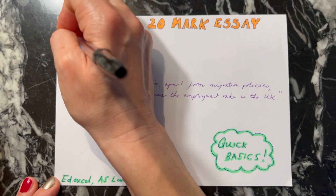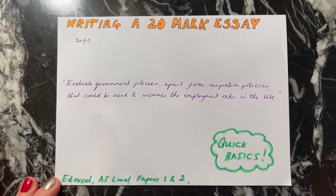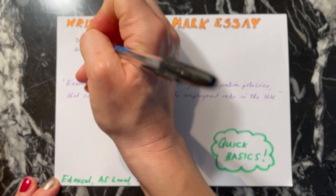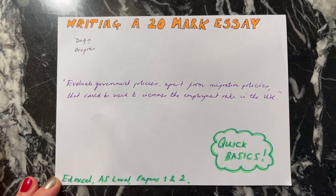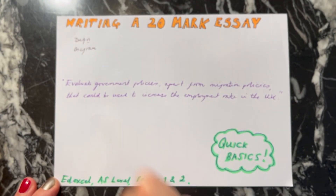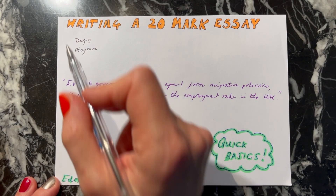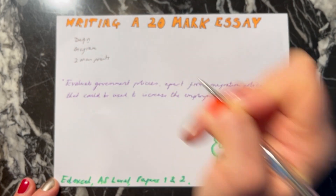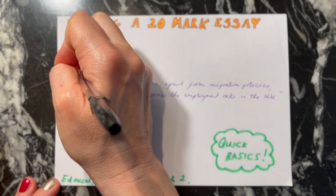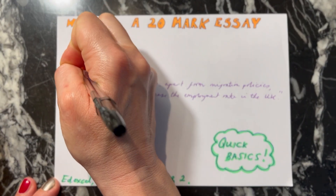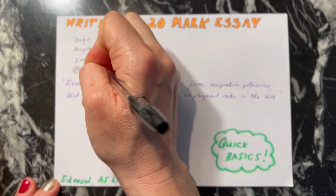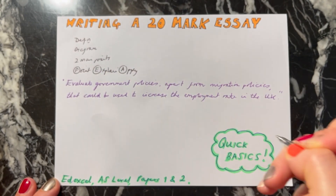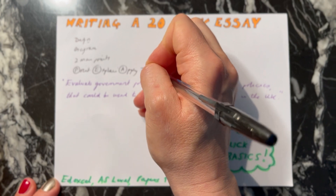The first thing I'd advise doing at the beginning is a definition, and then probably a diagram. You may do more diagrams later on. When you've done that, you need to think about making two main points. Throughout the whole essay, you're going to follow a process of making a point, explaining your point, applying your point, and then some thinking.